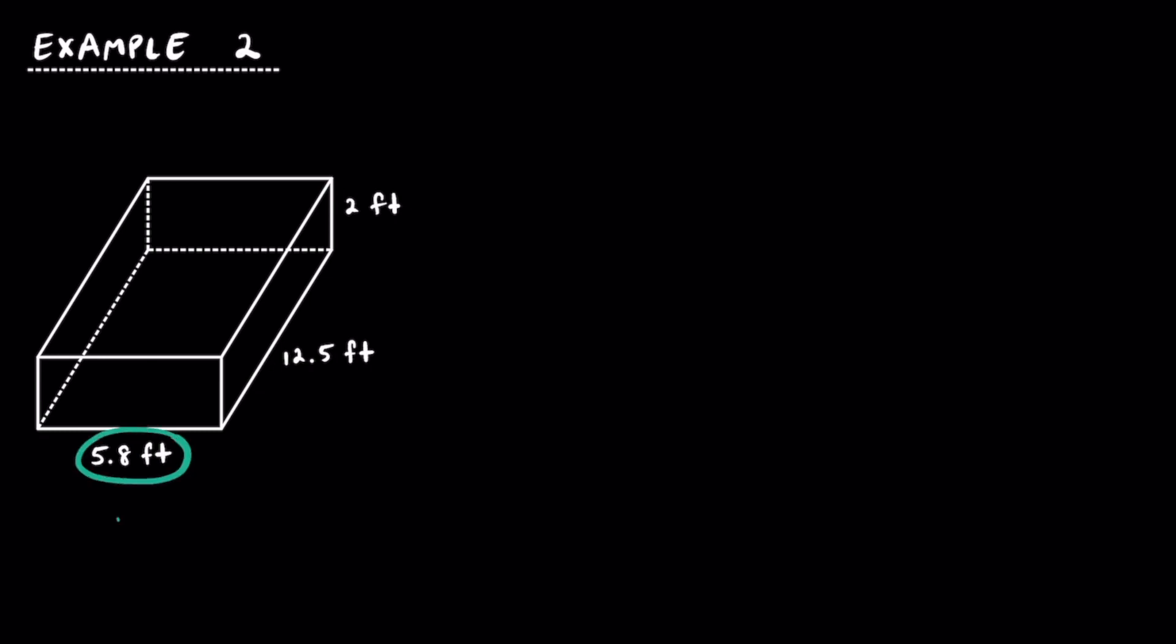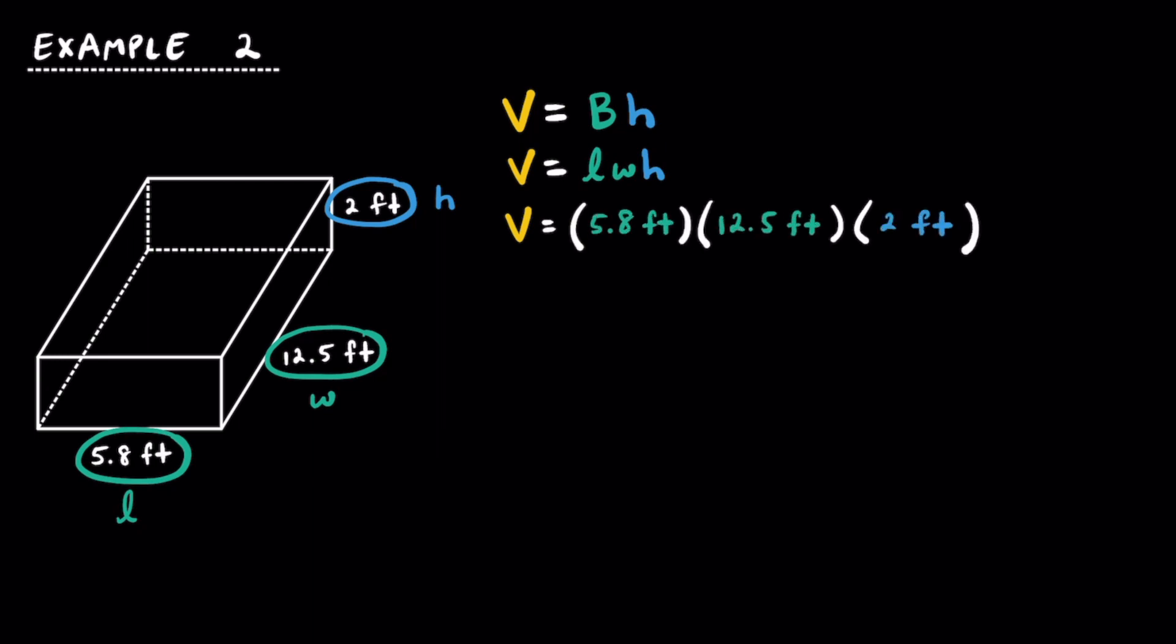In the second example, let's take a look at a rectangular prism that has dimensions that are decimals. We have a length of 5.8 feet, a width of 12.5 feet, and a height of 2 feet. Let's start by writing our formula of volume is equal to the area of the base times the height, and since the base is a rectangle, we can say the volume is equal to length times width times height, and we know our length is going to be 5.8 feet, our width is going to be 12.5 feet, and our height is 2 feet.